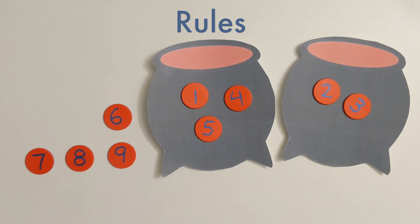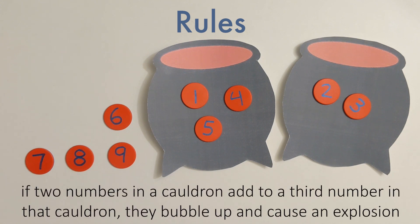Our numbers are actually highly potent alchemic ingredients, and under the right conditions, they cause the cauldron to bubble over and become unstable. That happens when two of the numbers in our cauldron add up to a third number in our cauldron.